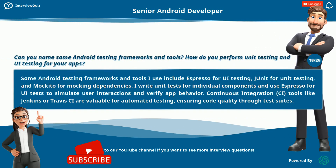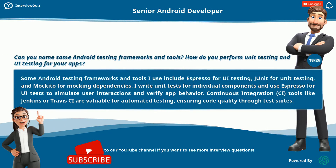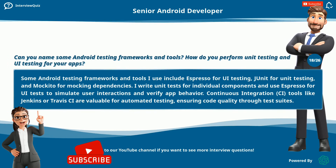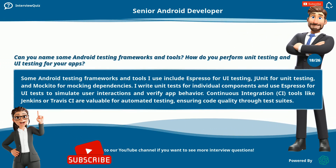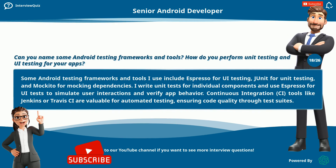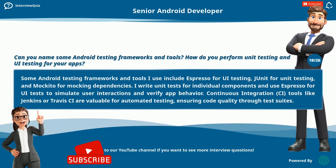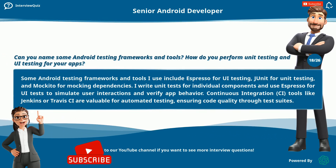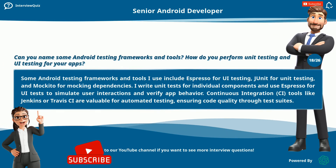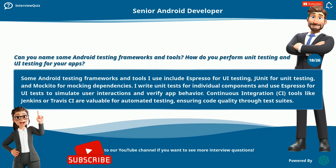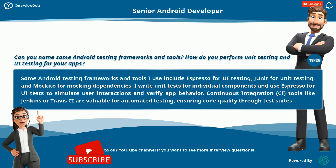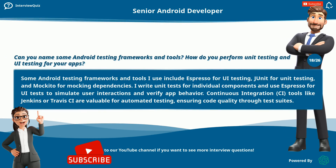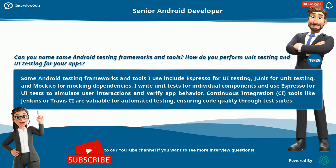Can you name some Android testing frameworks and tools? How do you perform unit testing and UI testing for your apps? Some Android testing frameworks and tools I use include Espresso for UI testing, JUnit for unit testing, and Mockito for mocking dependencies. I write unit tests for individual components and use Espresso for UI tests to simulate user interactions and verify app behavior. Continuous integration tools like Jenkins or Travis CI are valuable for automated testing, ensuring code quality through test suites.